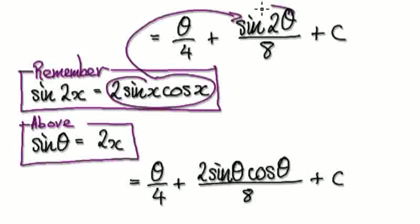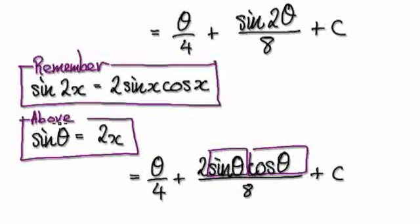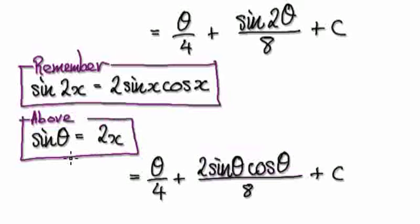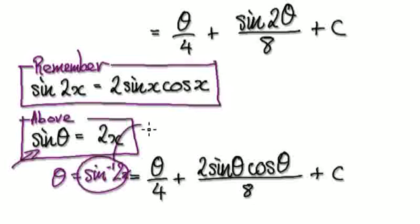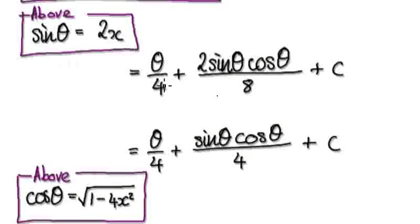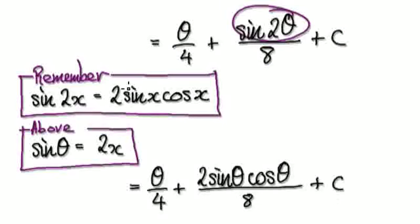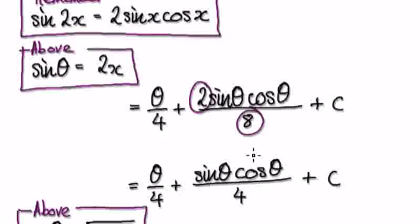Replace sin 2θ with 2 sin θ cos θ and put it into the expression. This takes us to the next stage. Everything is now accessible: from above, sin θ = 2x, so θ = arcsin(2x). We can substitute this in. Then tidy up the expression to get our result expressed in terms of x.